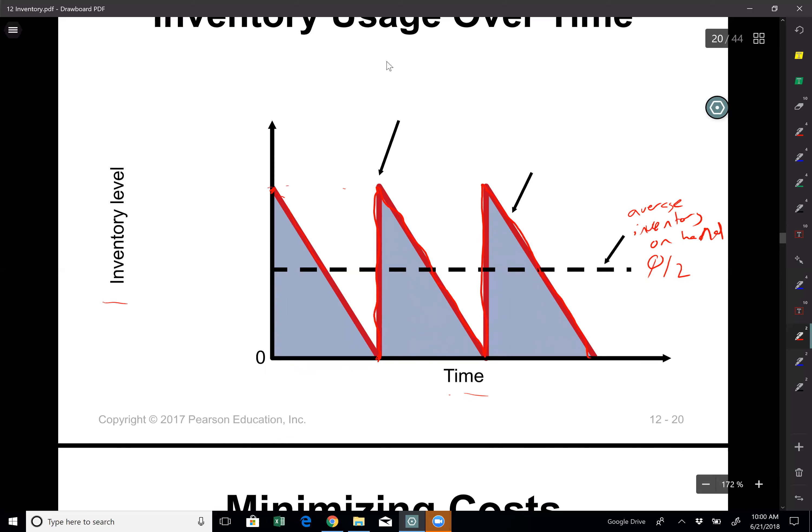Q is the order quantity. So whenever we order, we order that many products. This is my decision variable because that's what I'm trying to figure out.